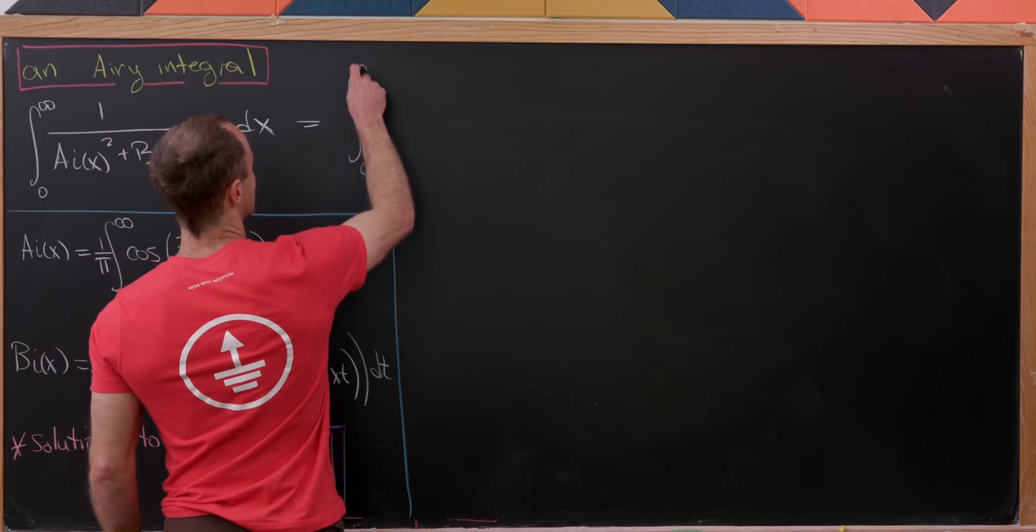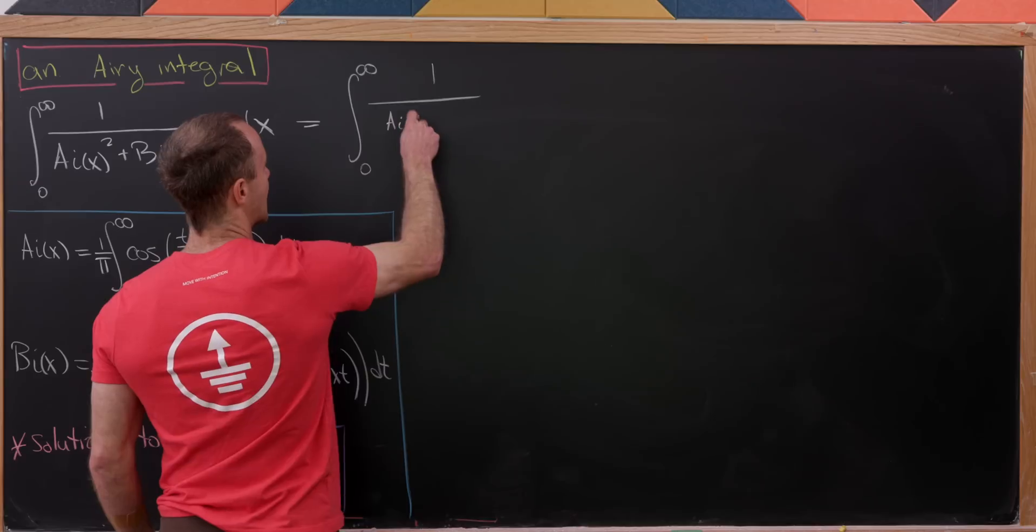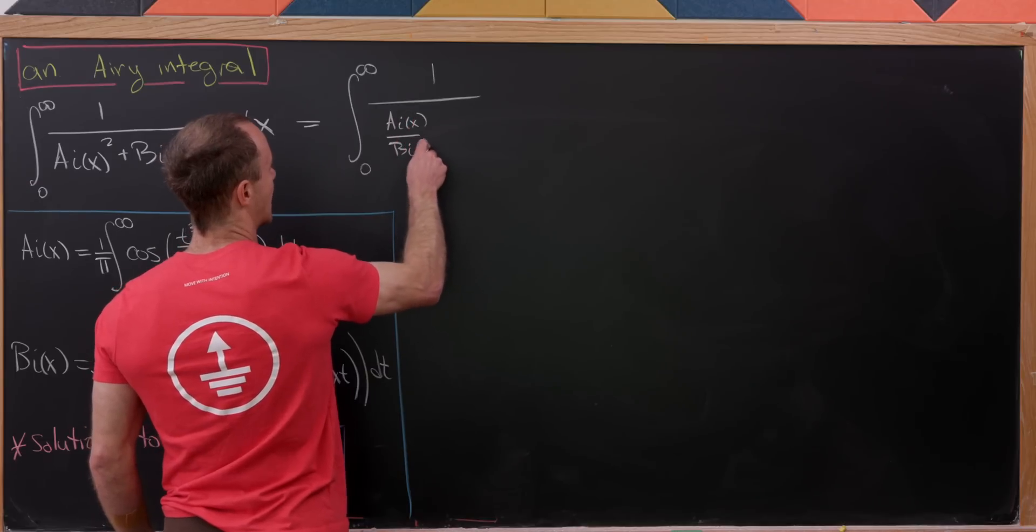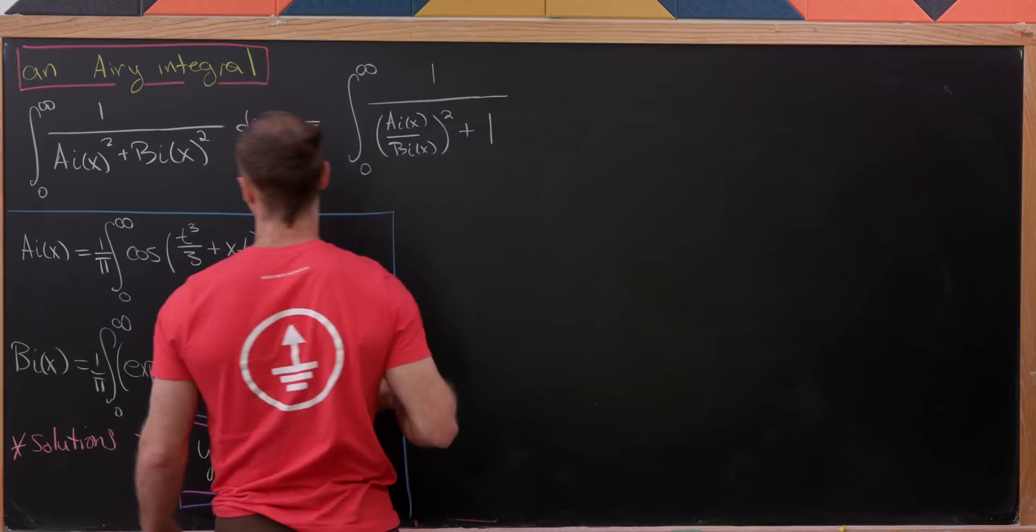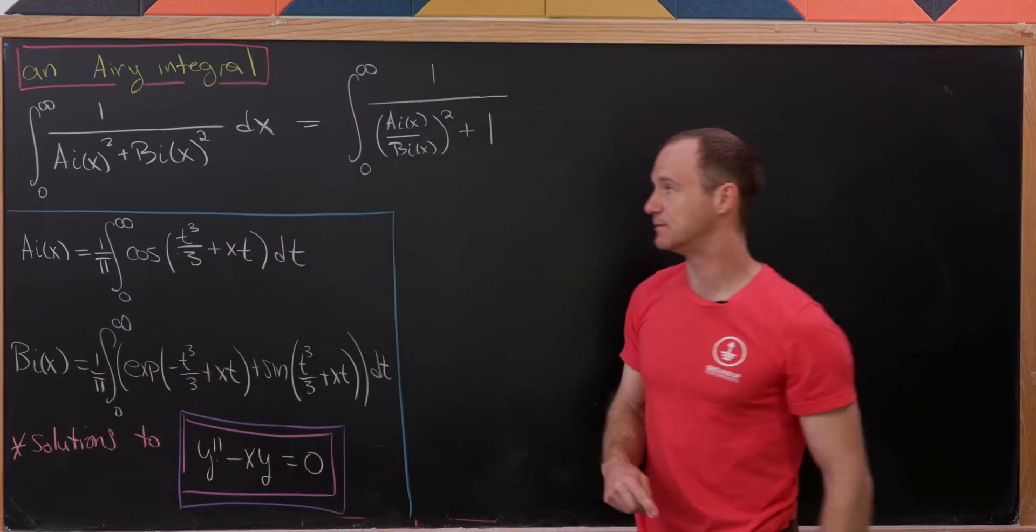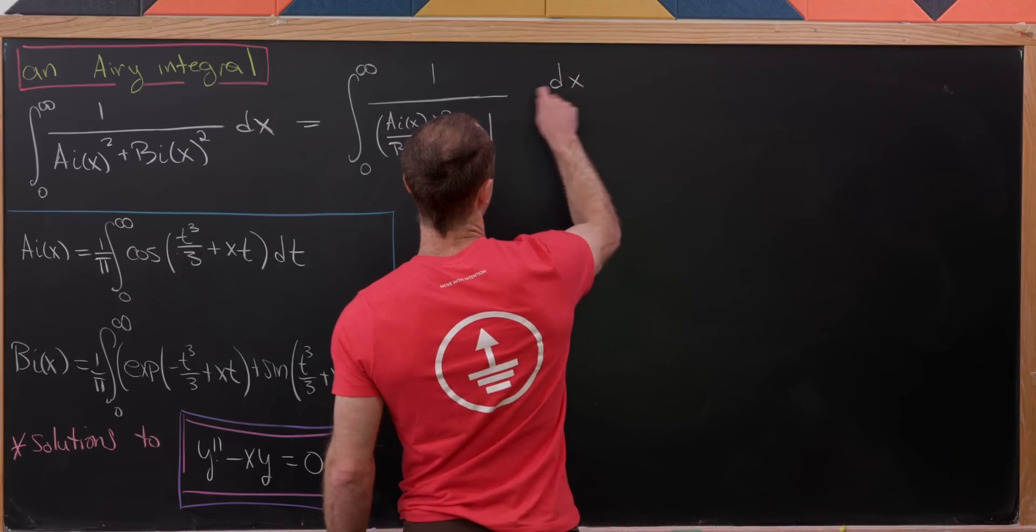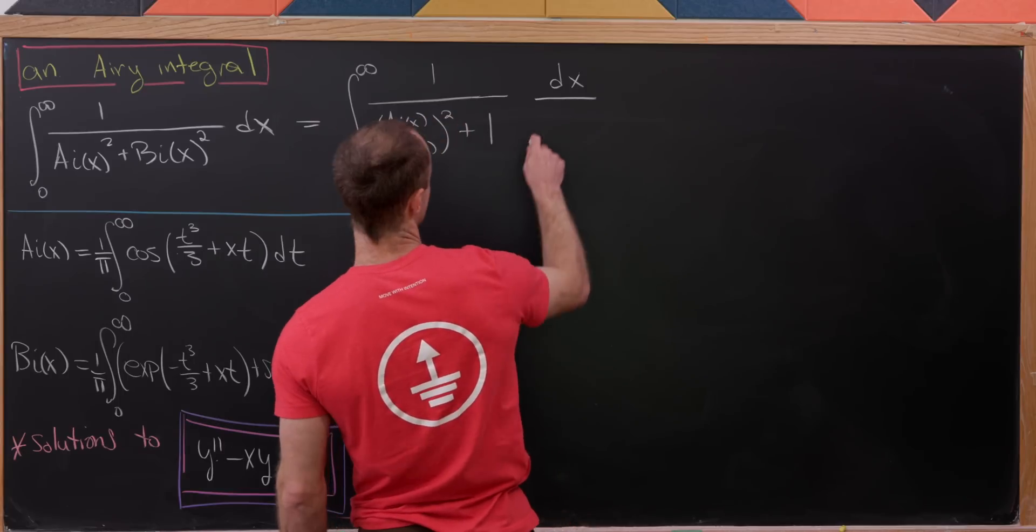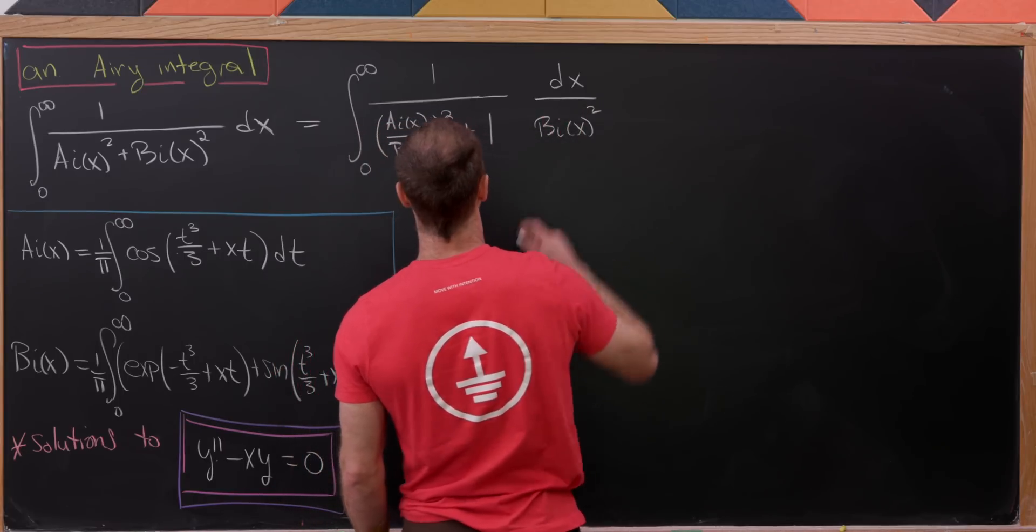We'll have the integral from 0 to infinity. Now we'll have 1 over AI of x over BI of x all squared plus 1. That's because I factored this BI of x squared out of the denominator, but it's got to go somewhere. So I'll put it under this dx term. So here I've got BI of x squared.